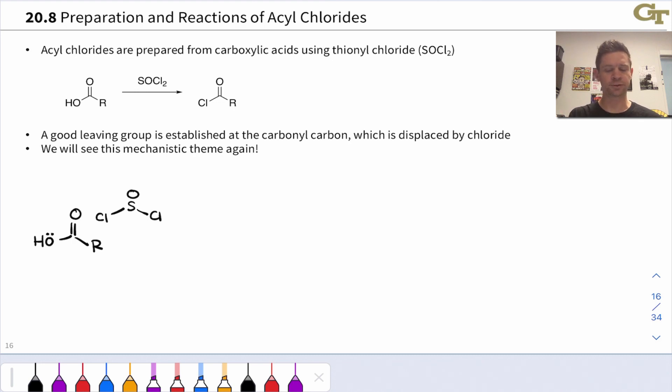The exception is carboxylic acids under the influence of this reagent SOCl2 or thionyl chloride. The basic idea here and the reason a carboxylic acid in particular works is that we can transform the OH group into a good leaving group mechanistically. An intermediate is going to get generated in which we have a leaving group that's even better than chloride that can depart irreversibly when chloride adds in leaving the acyl chloride product.